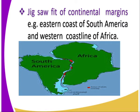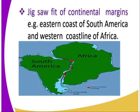One, we have the jigsaw fit of the continental margins. For example, we have the eastern coast of South America and the western coastline of Africa — they can merge together when brought together, as you can see. Even if you go to Europe and North America, if you bring them together, they can merge. So that is the jigsaw fit of the continental margins, and there is evidence that these continents were initially one.